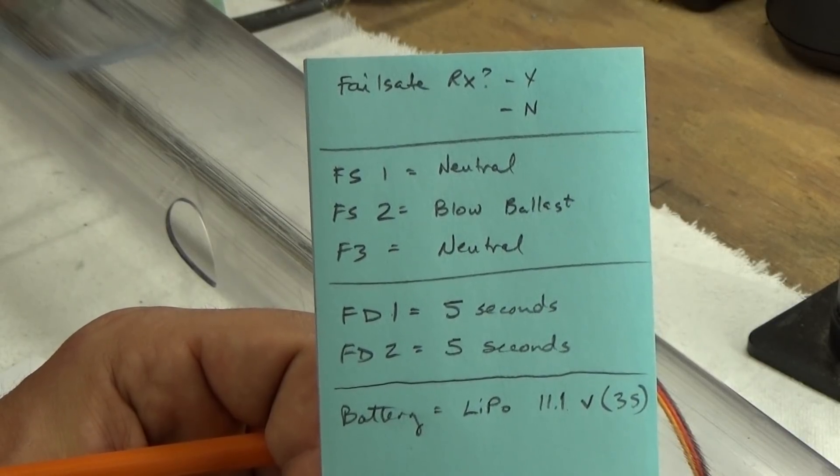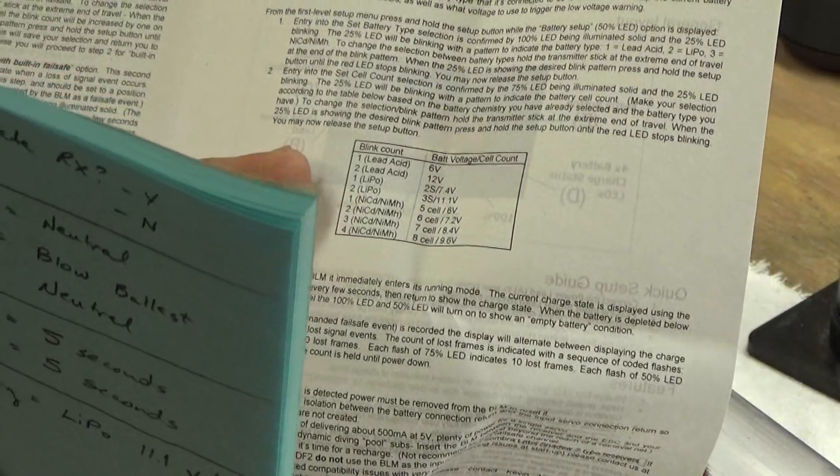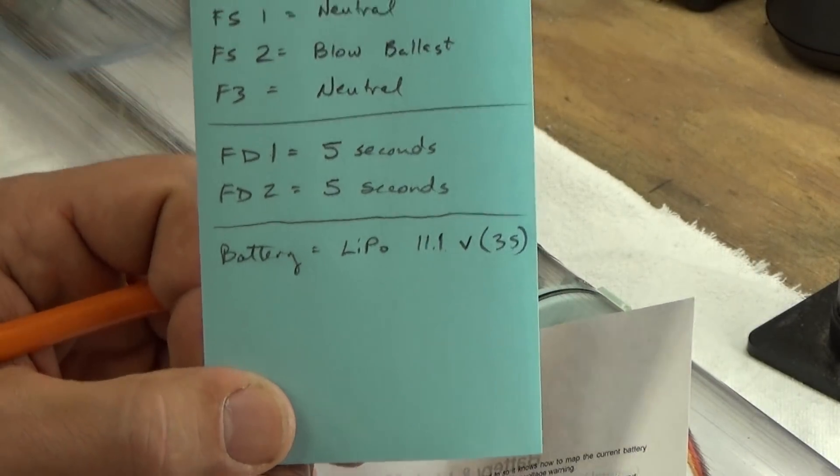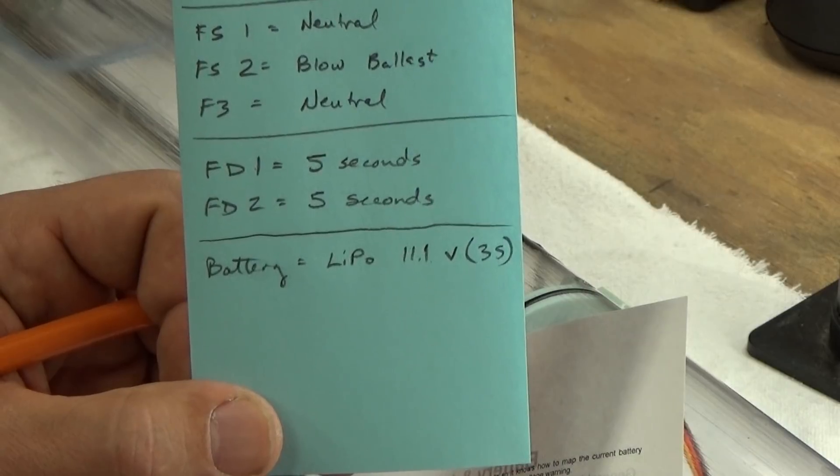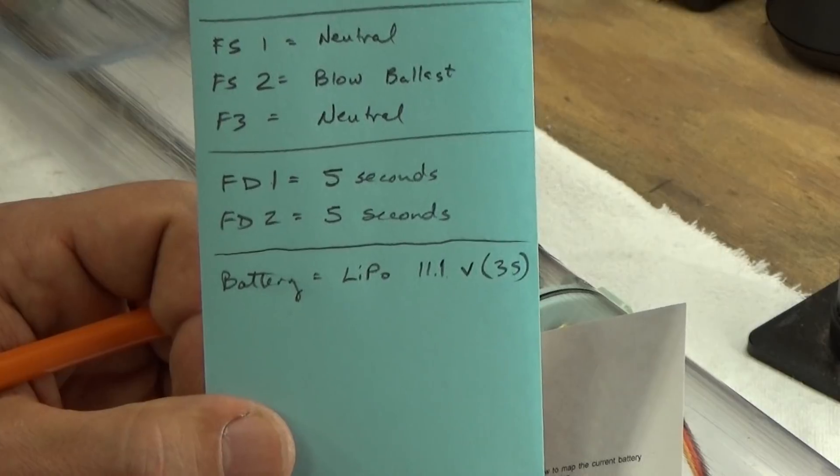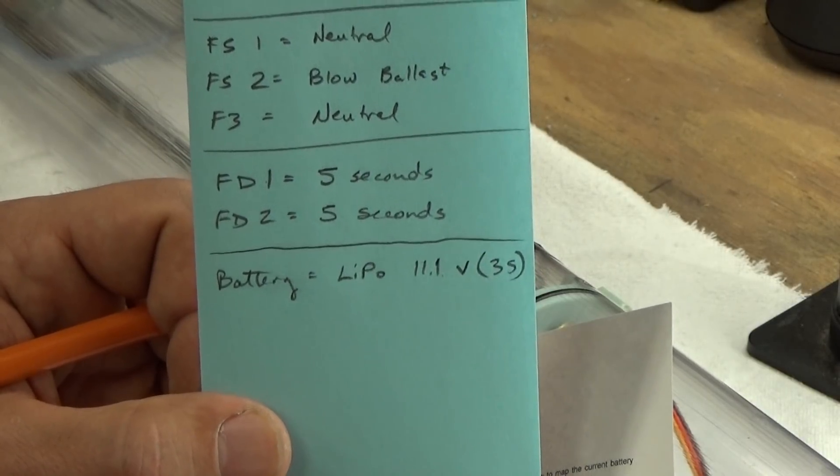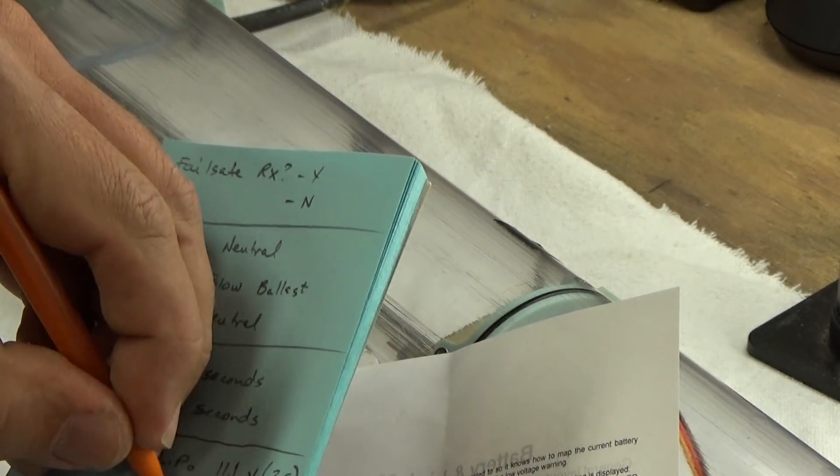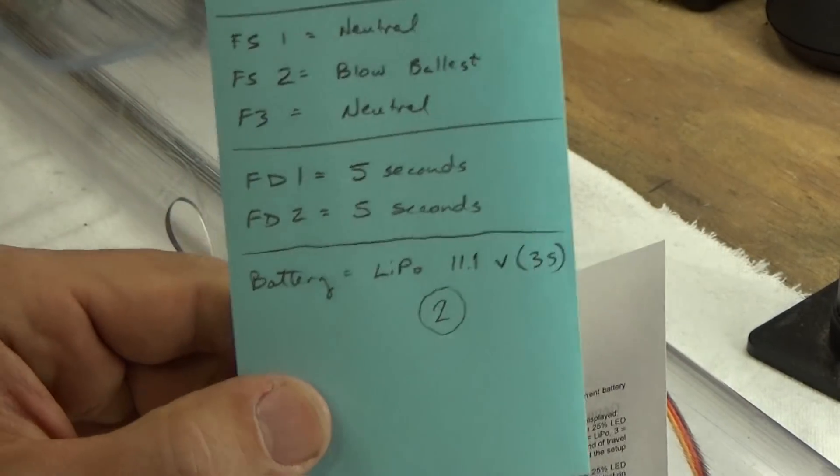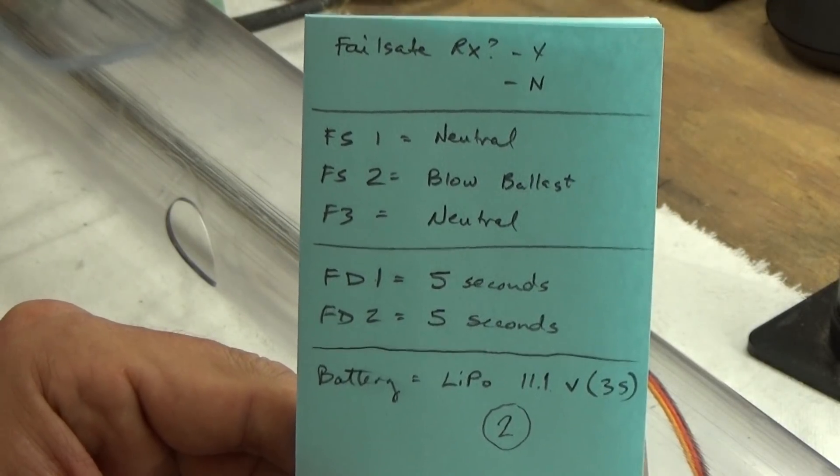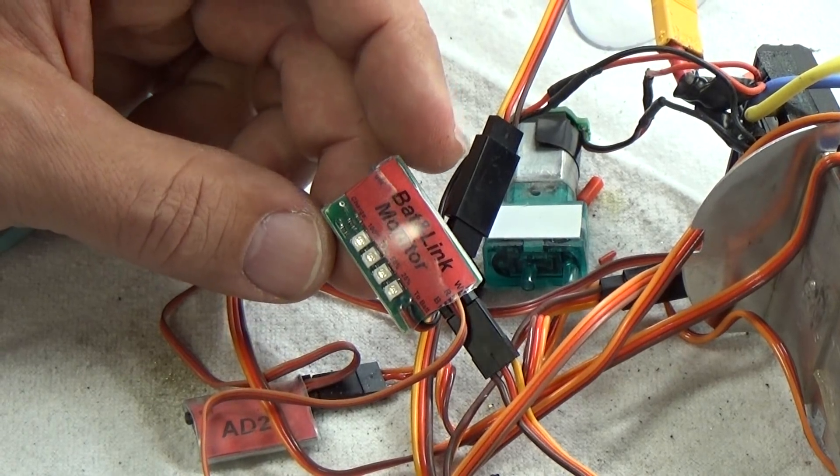The last thing you want to do is take a look at the handy dandy included chart in the instructions. Find the battery that you're using and the associated number. In my particular case, I have a lithium polymer battery of 11.1 volts, it's a 3s cell. My blink count is going to be 2 according to this chart. Keep that handy and we will move into the actual programming.